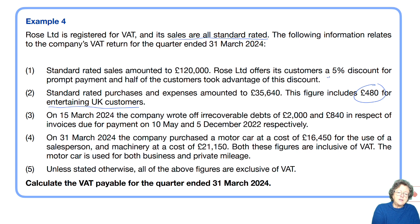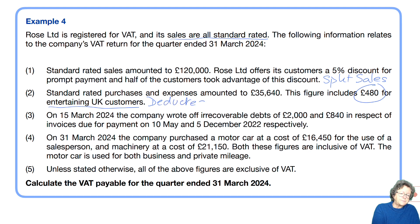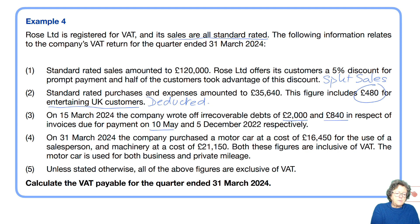In this situation, we're going to have to split the sales because of that first rule regarding the discount. There are also irrecoverable debts — one dated the 10th of May and one the 5th of December. We need to check which one of those is over six months old relative to the 31st of March quarter end.